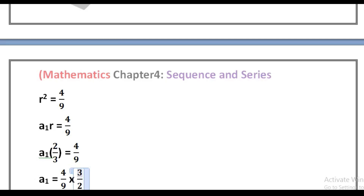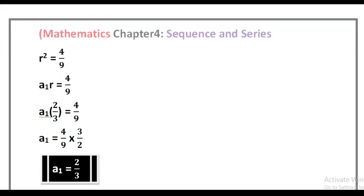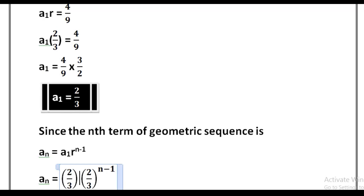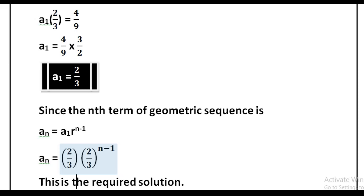So a₁ is equal to 4/9 multiplied by 3/2, which simplifies to 2/3. Therefore a₁ = 2/3. Since the nth term of a geometric sequence is aₙ = a₁·r^(n−1), substituting a₁ = 2/3 and r = 2/3 gives aₙ = (2/3)·(2/3)^(n−1). This is the required solution. If you like my lecture, please subscribe, share, like, and press the bell icon.